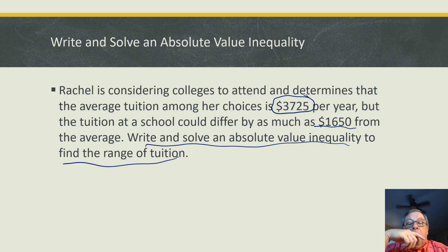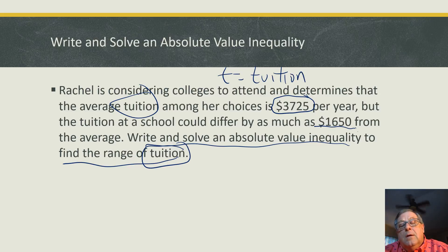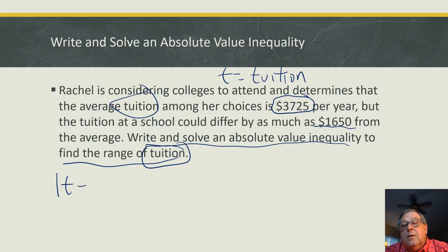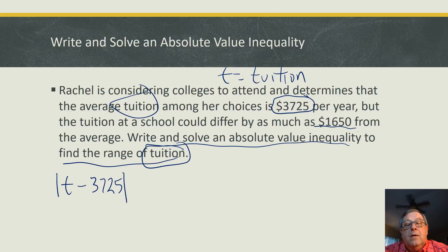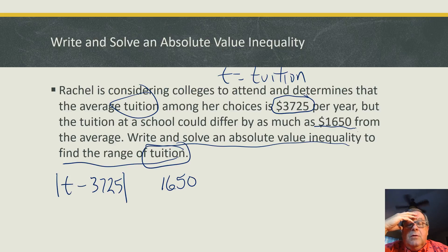Let's assign a variable. We're dealing with tuition, so let t equal tuition. We'll draw an absolute value symbol: the absolute value of t minus the average, three thousand seven hundred and twenty-five. The difference can be as much as one thousand six hundred and fifty dollars. Now let's think about our inequality symbol — greater than, greater than or equal to, less than, or less than or equal to.